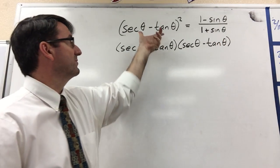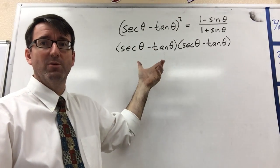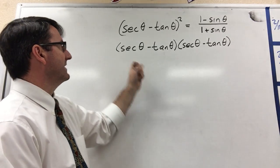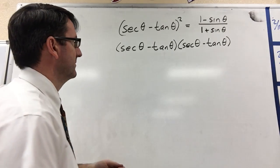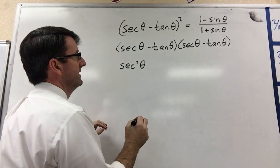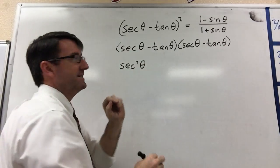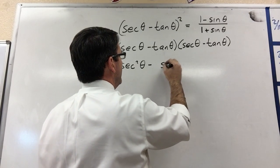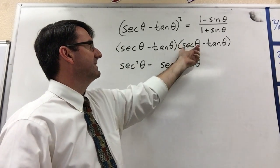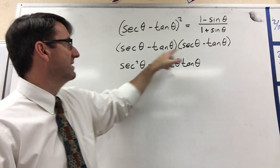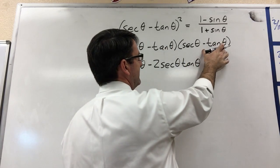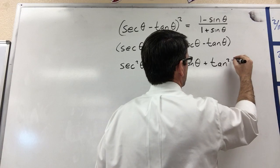I haven't really done anything there — I'm just rewriting this. This quantity squared is just equal to that quantity times itself. I rewrote it like that so that we can FOIL this and you can see where all these terms are coming from. So secant theta times secant theta is secant squared theta. Secant theta times negative tangent theta is negative secant theta tangent theta, and then negative tangent theta times secant theta is the same thing, so let's combine those two — we'll just get two of those. And then negative tangent theta times negative tangent theta is positive tangent squared theta.